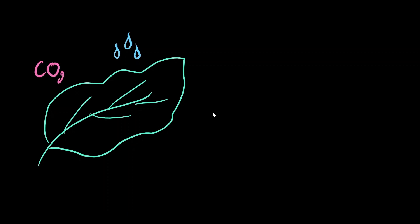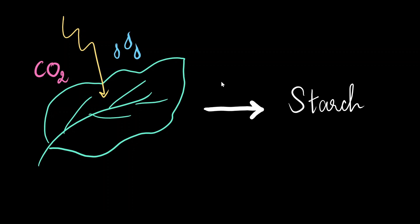Photosynthesis is a concept we have been learning from lower classes. It is the process through which plants are able to make food for themselves. A green leaf uses water and carbon dioxide in the presence of sunlight to produce starch and release oxygen gas. The knowledge we have about photosynthesis was not a miracle — it was due to years and years of research by a score of scientists. In this video, we are going to focus on five scientists whose contributions helped us understand photosynthesis the way it is today.